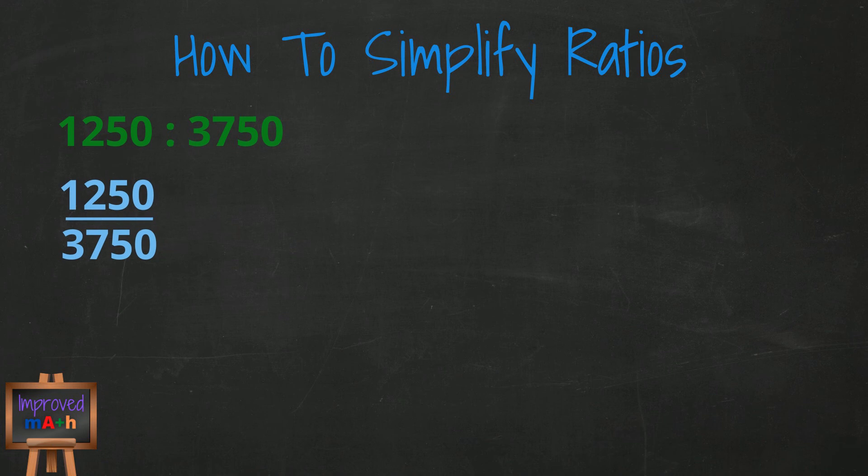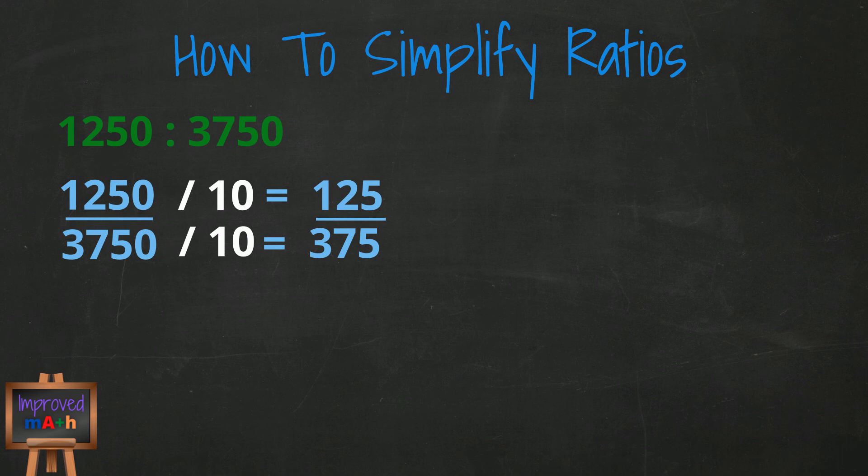Both numbers end in 0, which means they're both divisible by 10. So let's divide 10 into both numbers and see what we get. 1,250 divided by 10 equals 125. 3,750 divided by 10 equals 375.